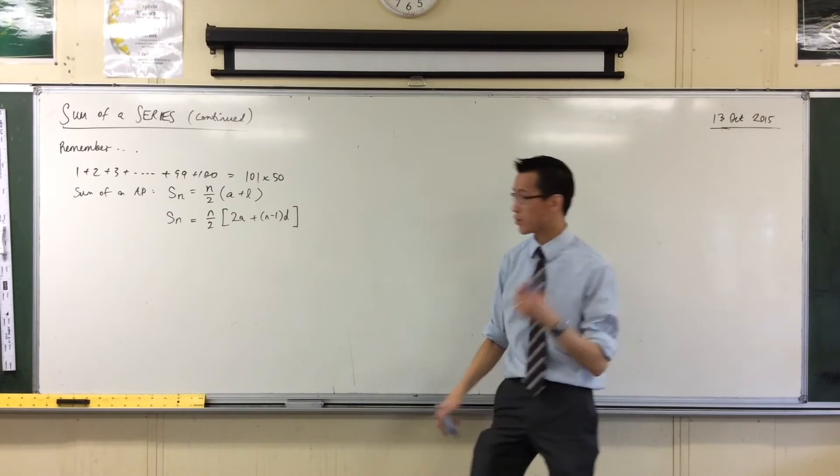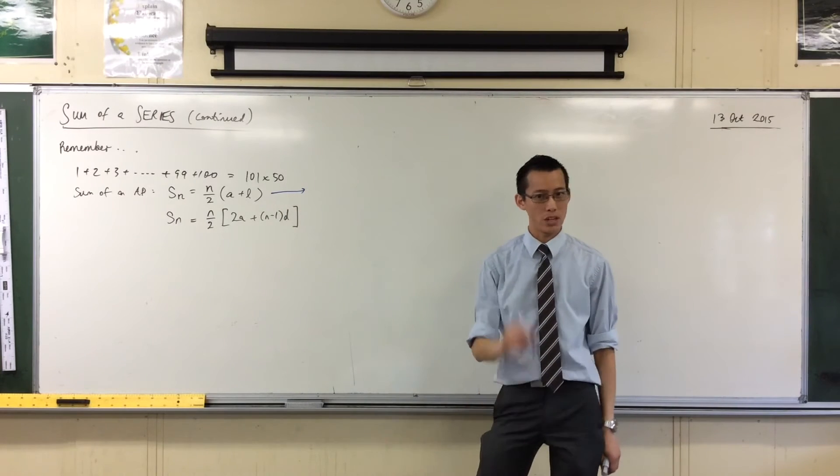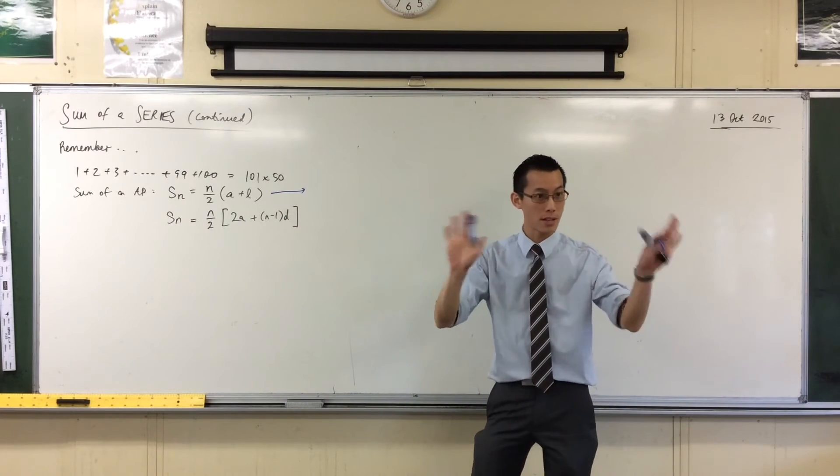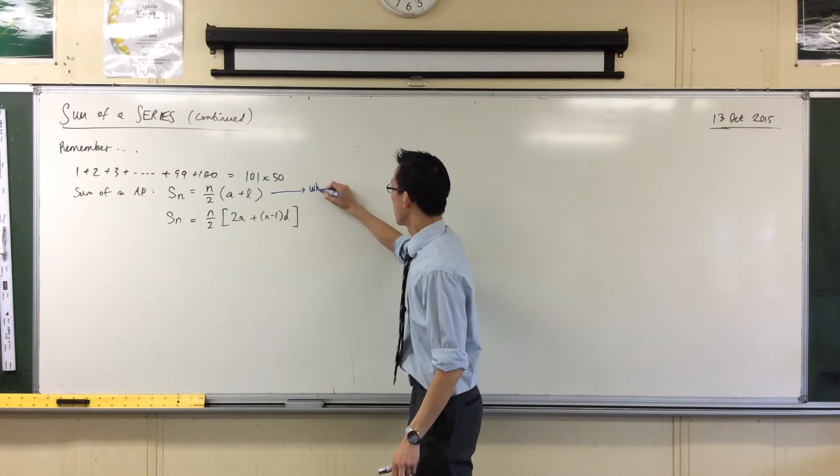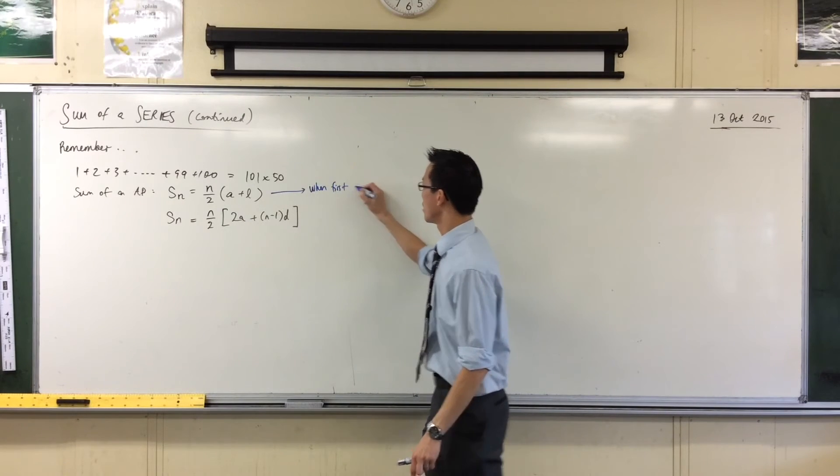And in fact both of them, both forms kind of assume there's a last term. There's an nth term and that's where you stop. Okay, so just to make sure you've got this in your head, right, when do we use this? We use this one when we know what the first and last terms are, right, where first and last terms are known.